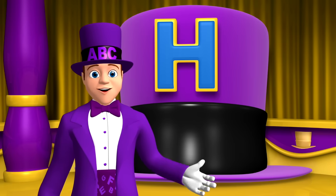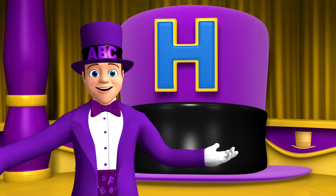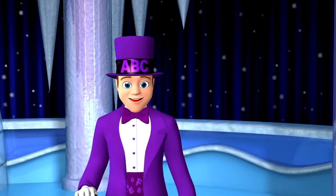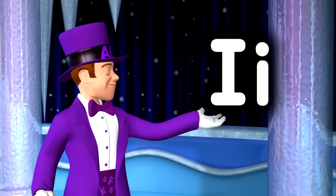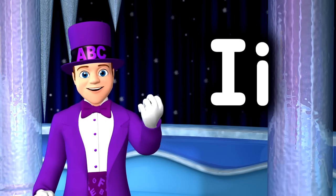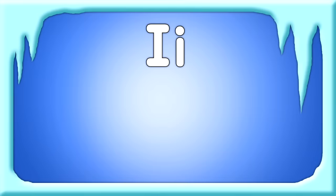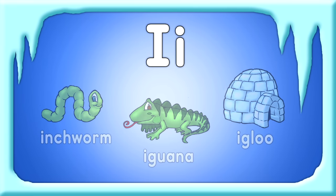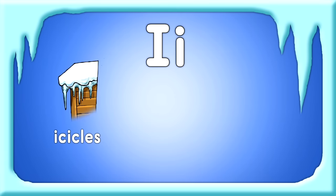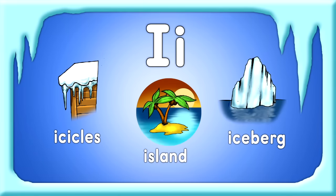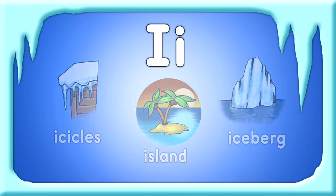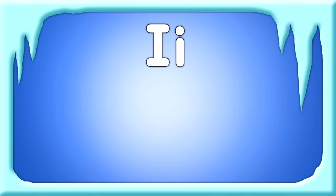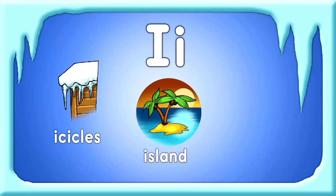We've sung H words, and had some fun. Now our little song is done. Isn't that special? I think so. I see a capital I and a lowercase i. I have I words to sing with you. Inchworm, iguana, and igloo. These I words you might have heard. Icicles, island, and iceberg. Inchworm, iguana, and igloo. Icicles, island, and iceberg.